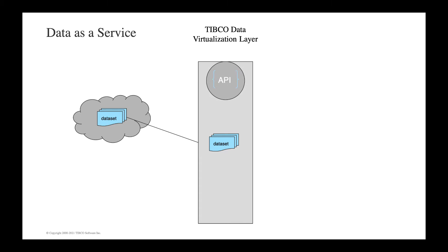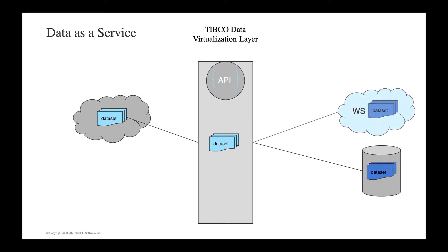Invoking the API will let you manage the different attributes within your TIBCO Data Virtualization workspace, such as data sources, views, schemas, and also allow you to manage deployments, scripts, sessions and user profiles. Then we'll distribute the data as two different data services: the first is a database data service and the second is a web service, both exposing the same dataset.